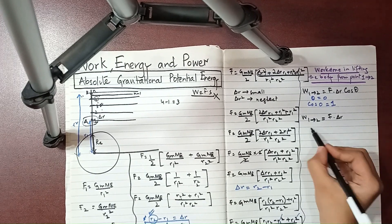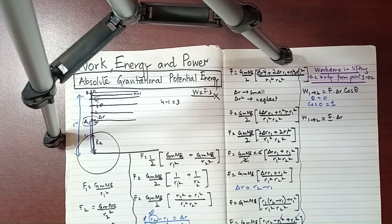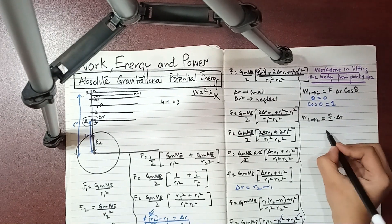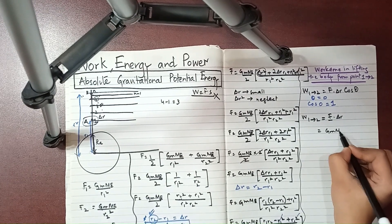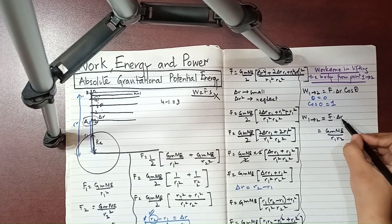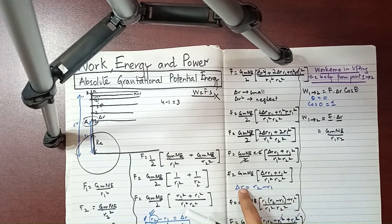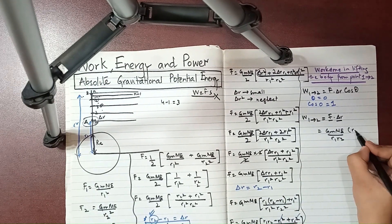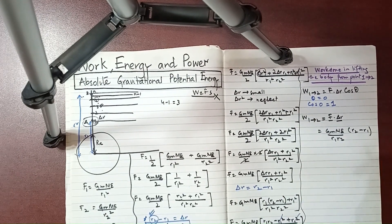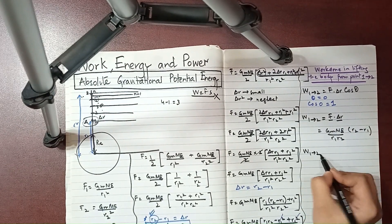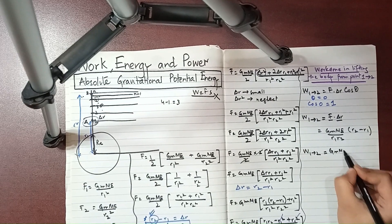For force, what we have here is GMₑm upon r₁r₂. So we will write force equals GMₑm / r₁r₂, and delta r here was r₂ minus r₁. So we will use this and that would be into r₂ minus r₁. Moving on, work done from 1 to 2 would be GMₑm...